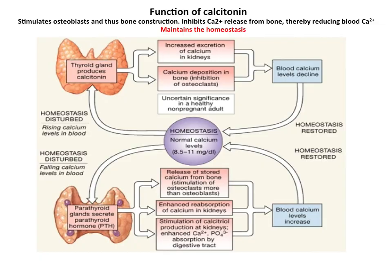Now calcitonin. As already discussed, calcitonin maintains homeostasis. It stimulates osteoblasts and is thus helpful in bone construction. It inhibits calcium ion release from the bone and thereby reduces blood calcium ion levels. When blood calcium ion level declines, it can induce calcium ion maintenance in the blood with the help of parathormone — the parathyroid hormone.